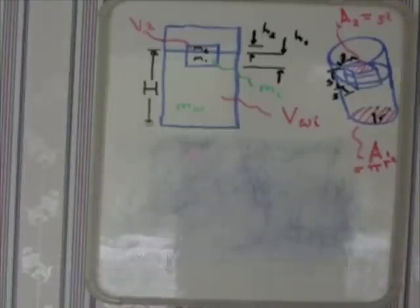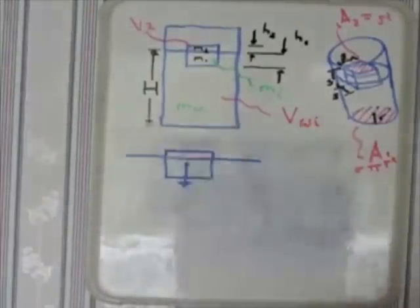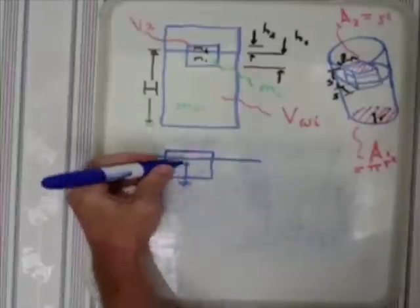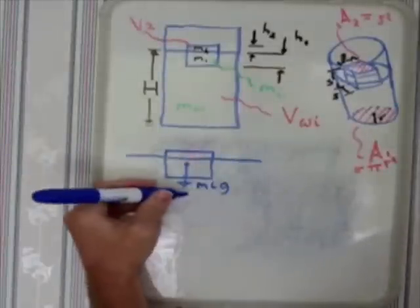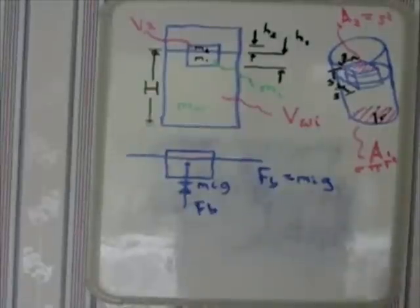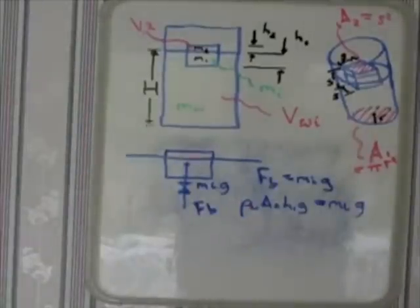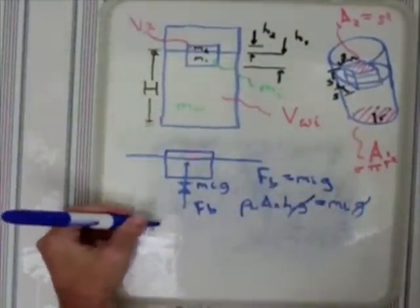So the next step is to get some of our terms in the equation in a manner that we can use. So we start with Archimedes principle and MIG equals the buoyant force. We get that from the Archimedes principle.